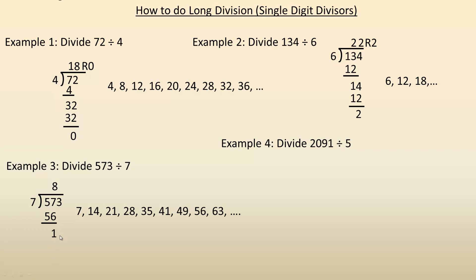So now we bring the 3 down. And so you ask yourself, how many times does 7 go into 13? Well, you see, the second multiple of 7, the 14, is bigger than 13. So 7 only goes into 13 once. So you put a 1 here, and 1 times 7 would be 7. And then we subtract 13 minus 7 is 6. So the remainder is 6. So 573 divided by 7 is 81 with the remainder of 6.